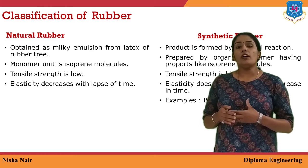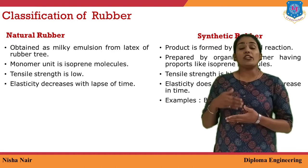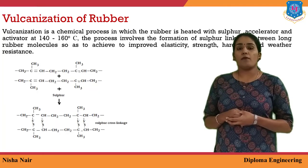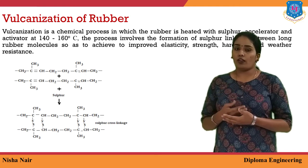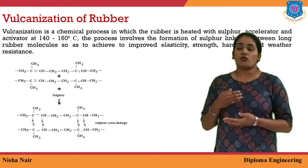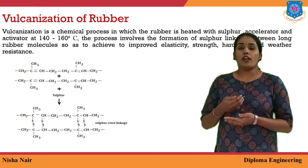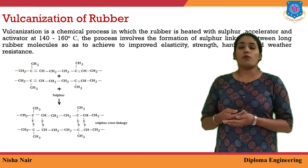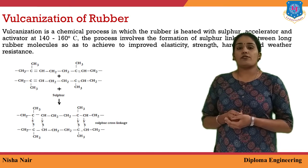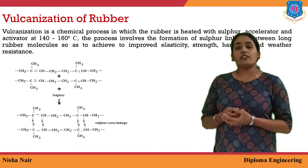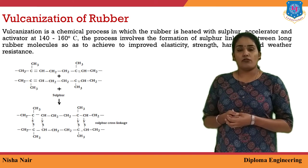Natural rubber doesn't have good properties on its own, so to increase the properties of rubber, we use a process called vulcanization. Why do we perform vulcanization on rubber? Because we need to increase the properties of natural rubber. To do this, we take the milky form obtained from the latex of rubber trees.